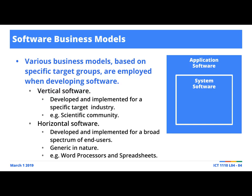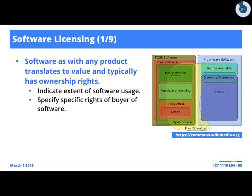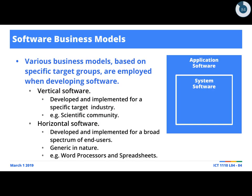Talking about software is incomplete if we don't talk about these important things like different business models associated with application software and licensing. There are various business models, but they all fall within two different classes — categories based on functionality. Whenever we read up on things like vertical software and horizontal software, what they're essentially telling us is that for vertical software, this is typically software specific to a particular domain.